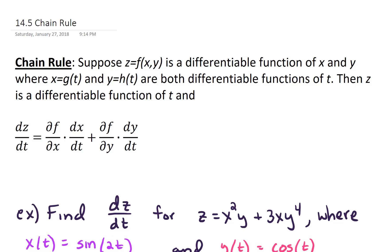Hello, in this video we're going to talk about the chain rule. Suppose z equals f of x, y is a differentiable function of x and y, where x equals g of t and y equals h of t are both differentiable functions of t. Then z is a differentiable function of t, and dz/dt equals the partial derivative of f with respect to x times dx/dt, plus the partial derivative of f with respect to y times dy/dt.